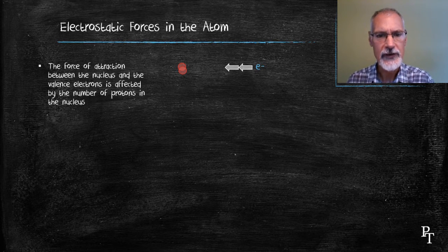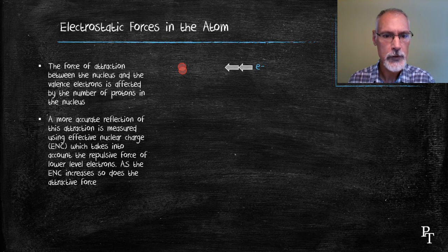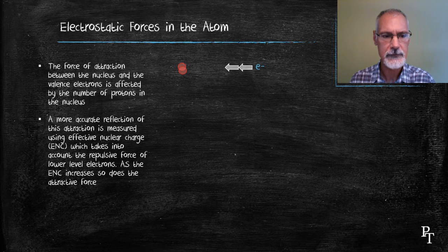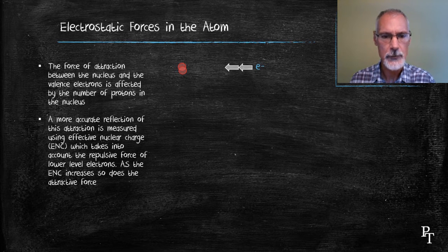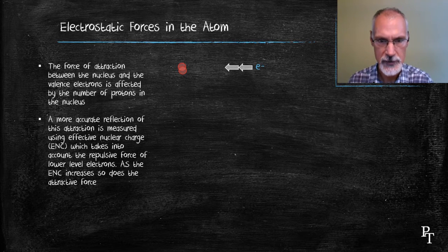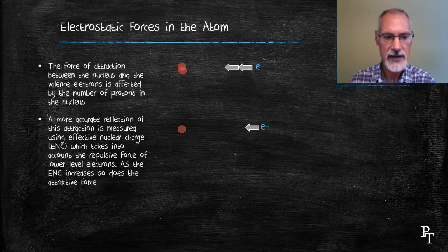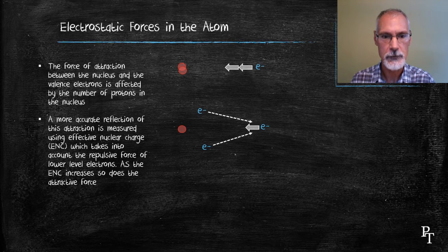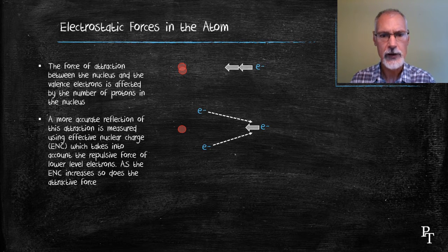But one of the things we know is as atoms get bigger, not only do we have more protons present in the nucleus, we also have more electrons. And this causes a complication to the problem. Because there simply isn't the force of attraction that's present with that electron, the inner-level or lower-level electrons will actually push out against that electron, repelling it.